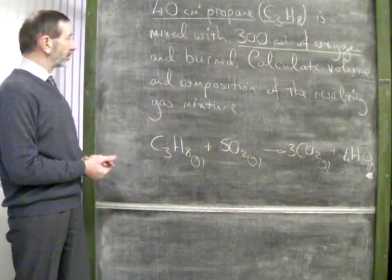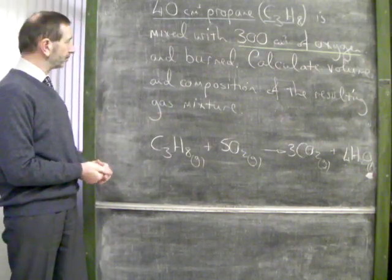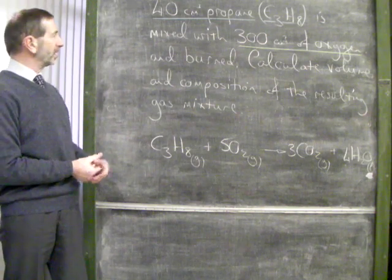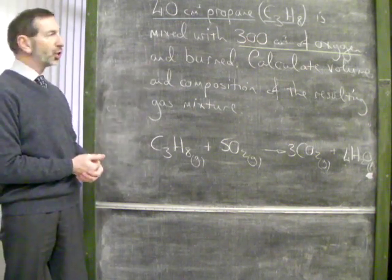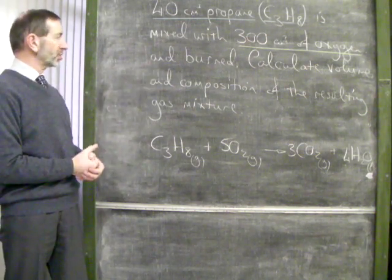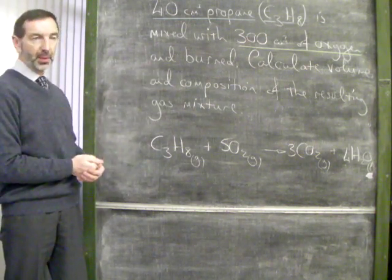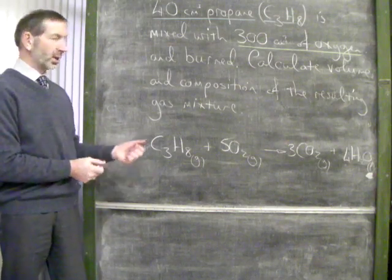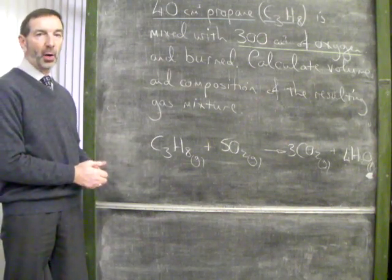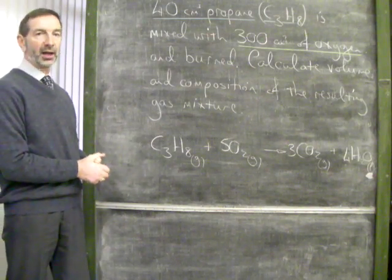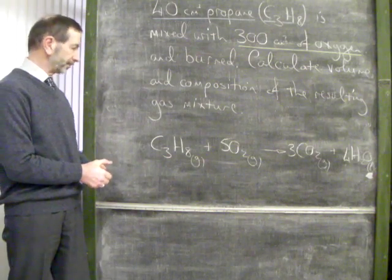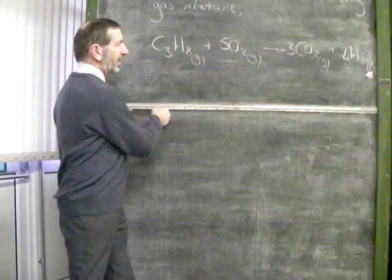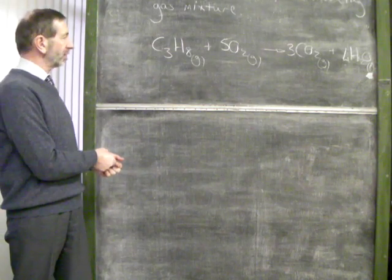Here's a typical example. 40 cubic centimetres of propane is mixed with 300 cubic centimetres of oxygen and burned. Calculate the volume and composition of the resulting gas mixture — in other words, what's left at the end of the reaction?